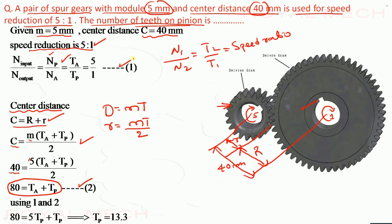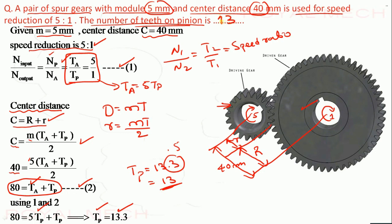So we have in equation number 1, Tg upon Tp equal to 5 by 1. So that we can write Tg equal to 5 Tp. So from this we can write Tg is equal to 5 times Tp. So that is here. Tg replaced by 5 Tp. So that gives Tp is equal to 13.3. Number of teeth on pinion equal to 13.3. So that is 13. Because 0.3 is less than 0.5, so we consider it as 13. Therefore given option is of value 13.